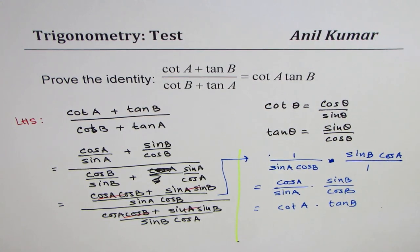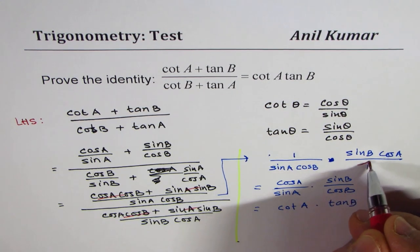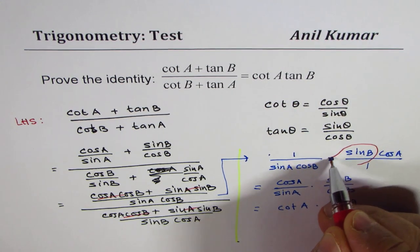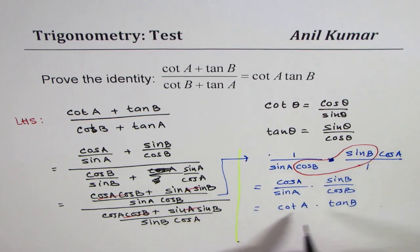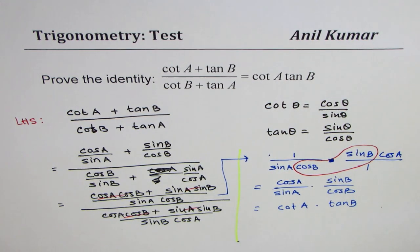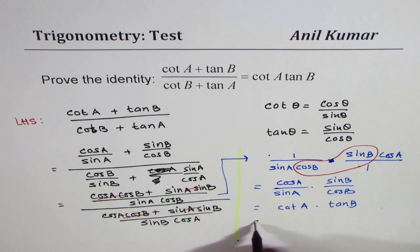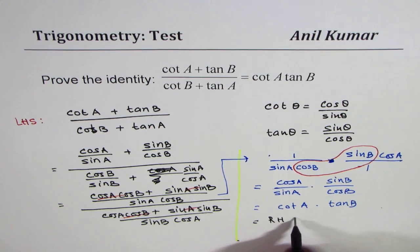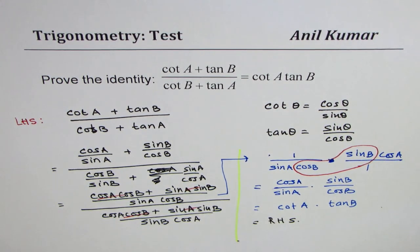So that is how you would actually prove such an identity. We get the right-hand side. I hope the steps are clear. Feel free to share your comments on my videos. Thanks for watching.